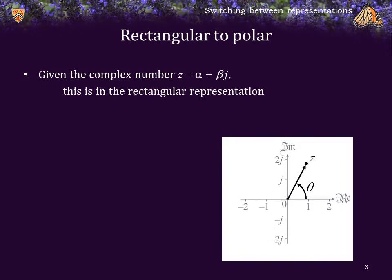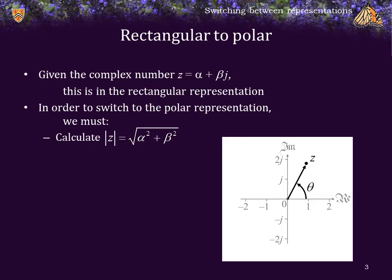Given the complex number z equals alpha plus beta j, this is in the rectangular representation. So alpha is the real part, or real component, and beta is the imaginary component. In order to convert this into the polar representation, we must calculate r, the length, or the absolute value of z. This can be done by simply calculating the square root of alpha squared plus beta squared. That gives us r.